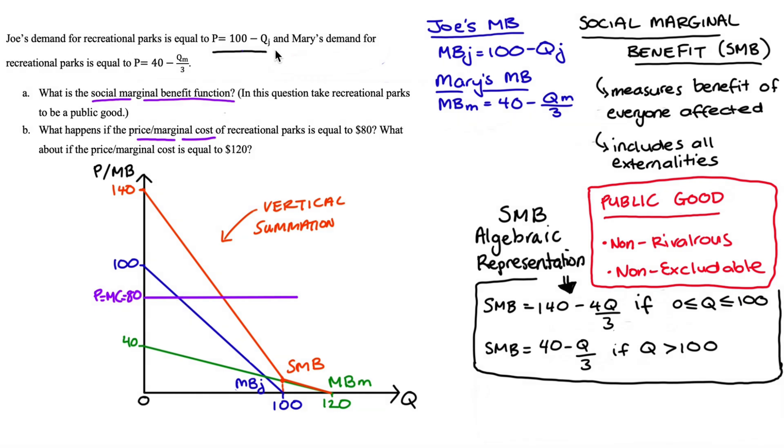And in fact substituting in the price of $80 into Joe's demand curve we see that, well just using the expression up here, $80 is equal to $100 minus QJ and this solves for QJ is equal to $20. And I'll put that on our diagram here.